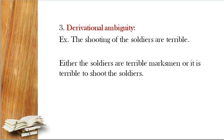Three: derivational ambiguity. الغموض الاشتقاقي. مثال: 'The shooting of the soldiers is terrible.' في هذه الجملة هناك غموض — either the soldiers are terrible marksmen, or it is terrible to shoot the soldiers. إما أن يكون الجنود مهرين في الرماية، أو أنه من المريع أن نقوم برمي الرصاص على الجنود.